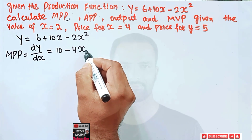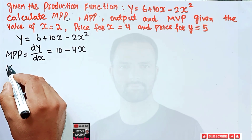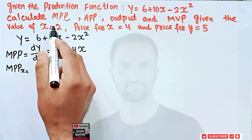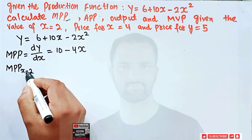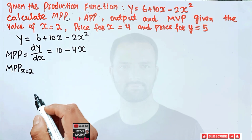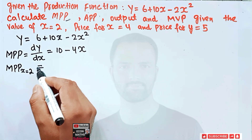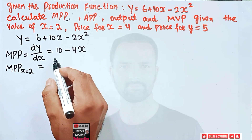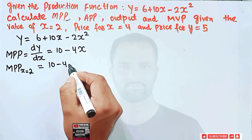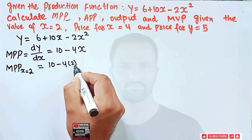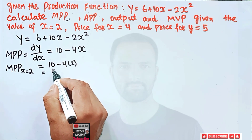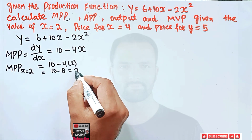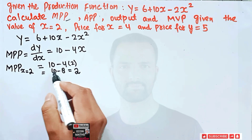Now we have to calculate the marginal physical product when x = 2. We just plug x = 2 into our MPP function: MPP = 10 - 4(2) = 10 - 8 = 2. So our marginal physical product is equal to 2.